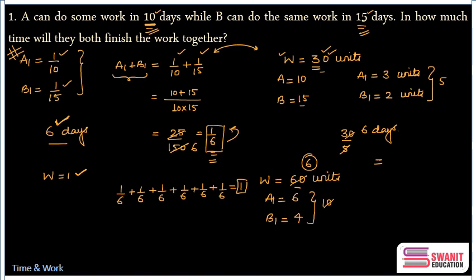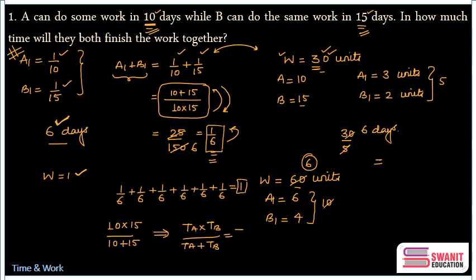Also, if you observe one more important thing here, and that is this calculation. If I reciprocate this calculation, I will get my answer. Which means, 10 multiplied by 15 divided by 10 plus 15 gives me my answer. And if I have to generalize this, I would say time taken by A multiplied by time taken by B divided by time taken by A plus time taken by B, that gives me time taken by A and B together. So, by this I can use a formula like this directly to find the answer of such questions. I hope the concept is clear.